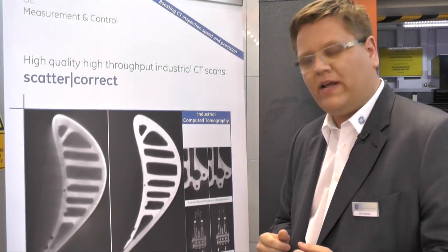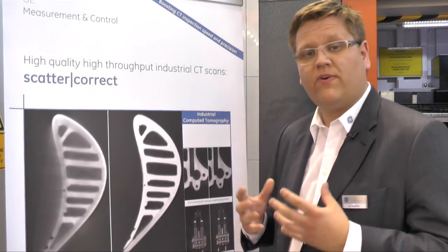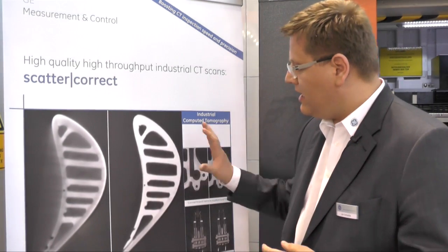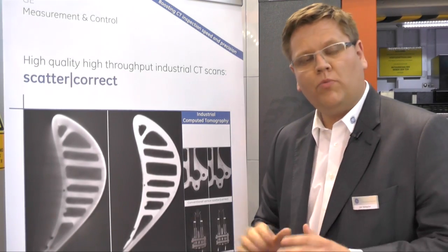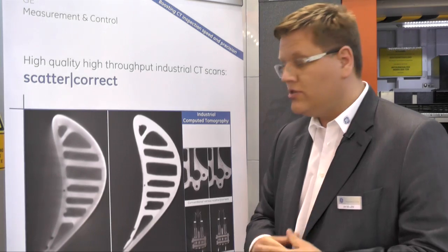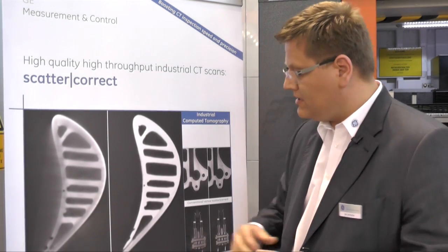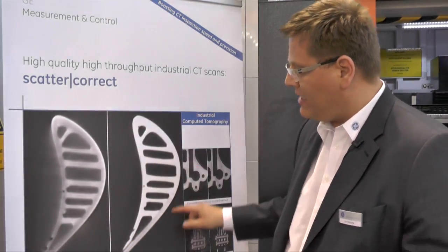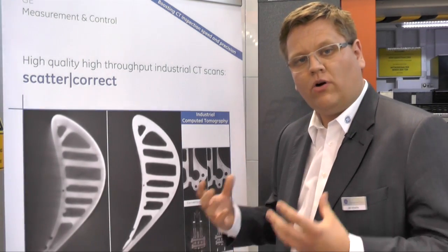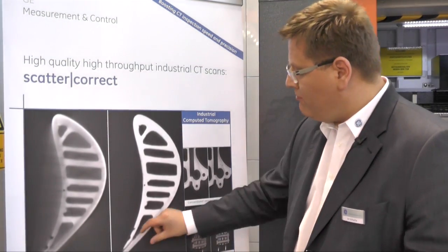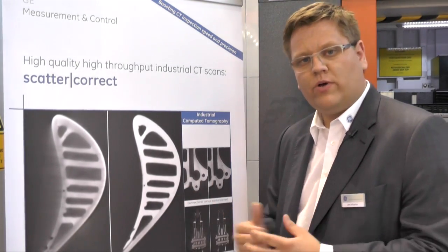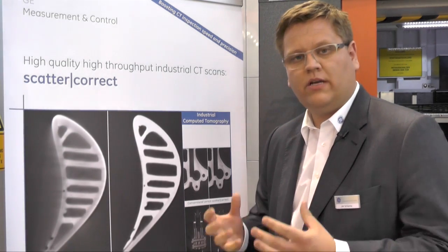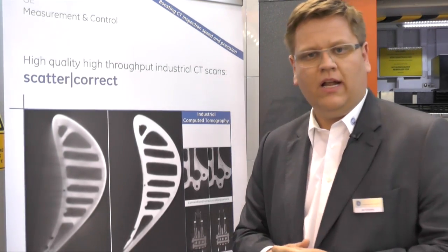We are using the flat panel detector, having the advantages of a fast CT scan, and achieving the result of a highly accurate, almost scatter-free CT scan. This now allows us to have really sharp edges, which enable us to solve metrology applications — measuring wall thicknesses and comparing CAD models with the CT acquired information.